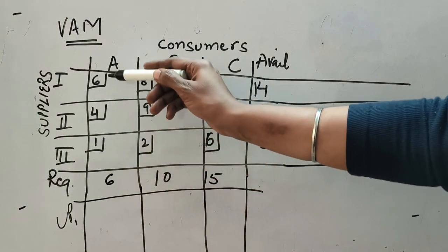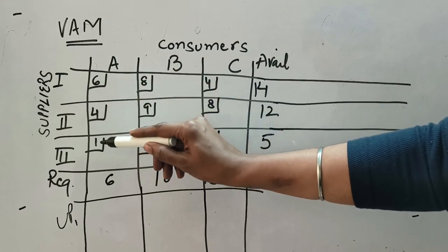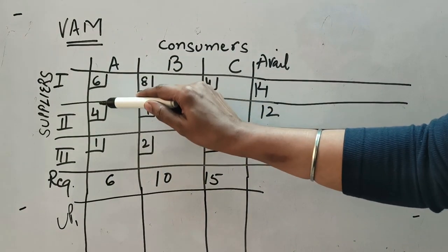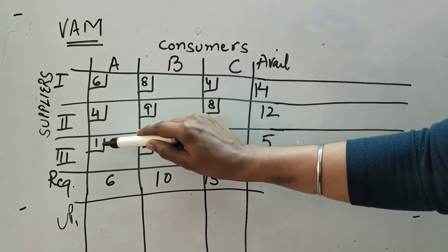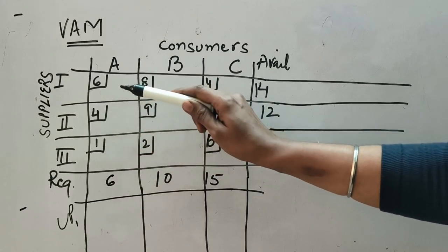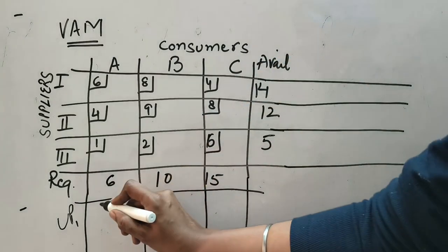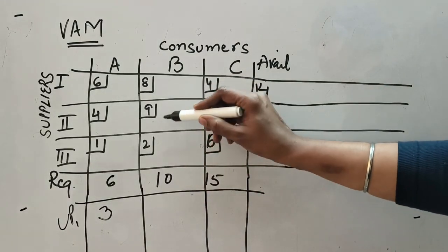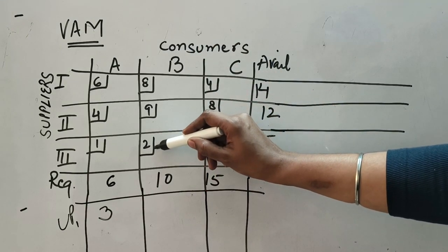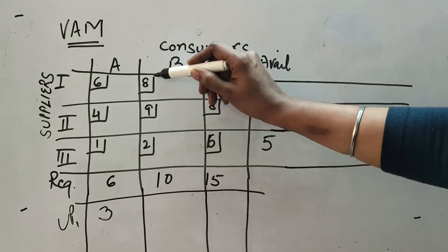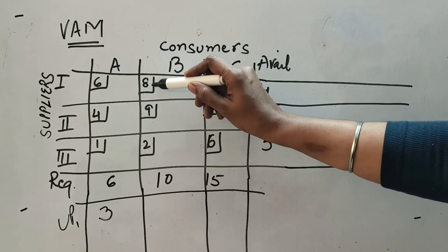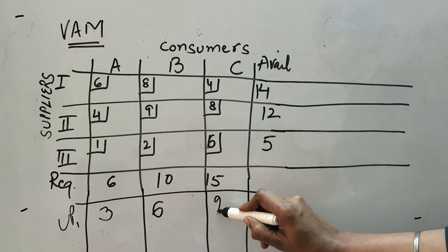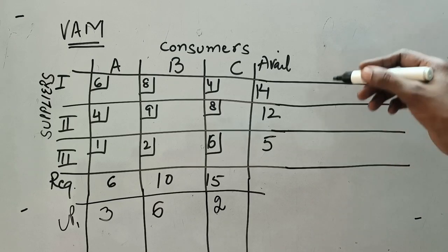Going inside the first row, there are three cost cells: 6, 4, and 1. The lowest is 1 and the next least is 4. The difference between 1 and 4 is 3 — you do not put any minus or plus sign, just take the difference between the lowest and the next lowest. For the second row, values are 2, 9, and 8; minimum is 2 and next minimum is 8, so the difference is 6. For the third row, minimum is 4 and next minimum is 6, difference is 2. So unit penalty UP1 row-wise comes to 3, 6, 2.